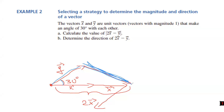Now for determining direction: we have the lengths of every side in this triangle. But we haven't solved for the angles yet. Using the sine law, sine is on top and the length of a side is in the denominator. We can find the angle between the resulting vector C and the unit vector x.